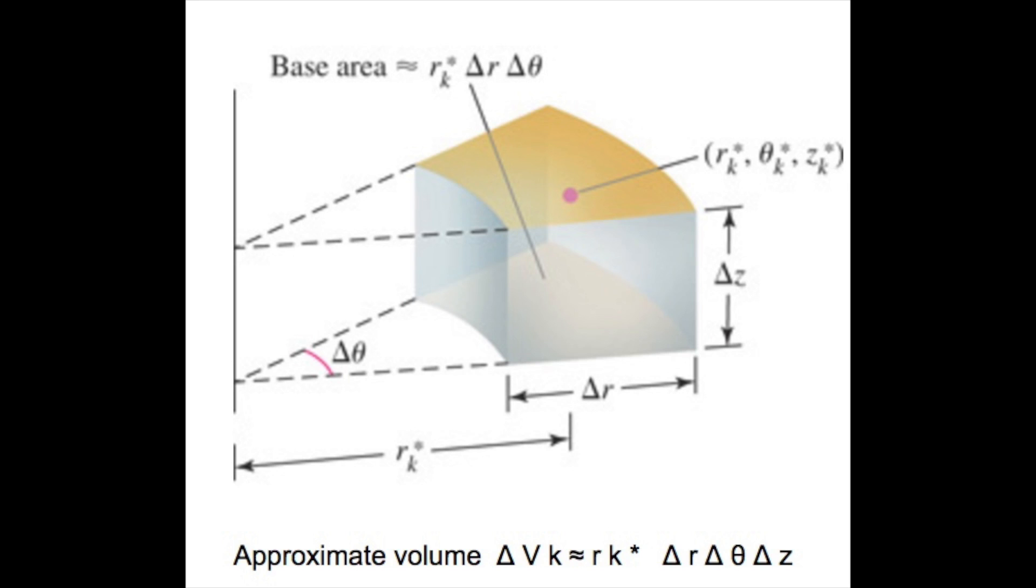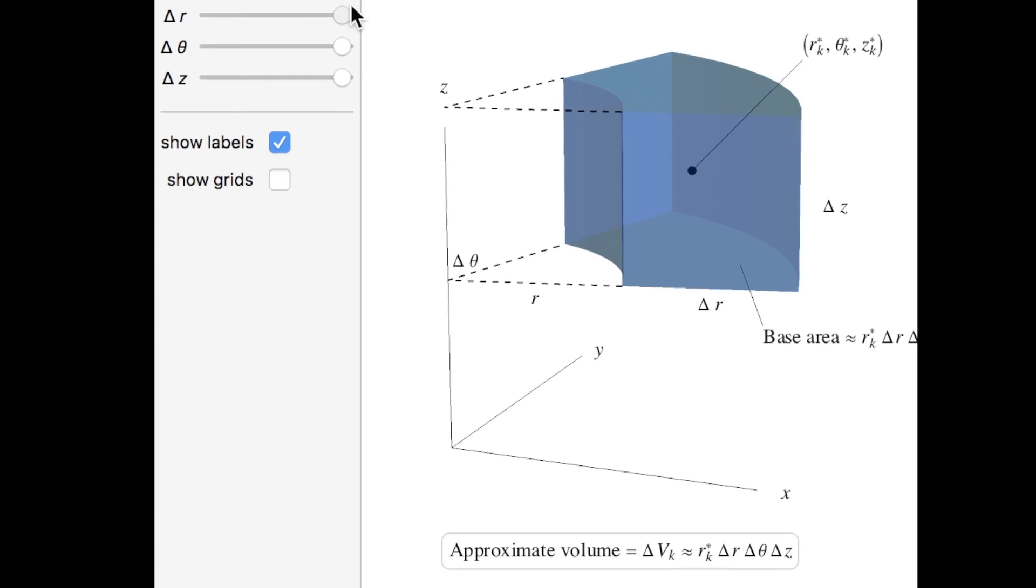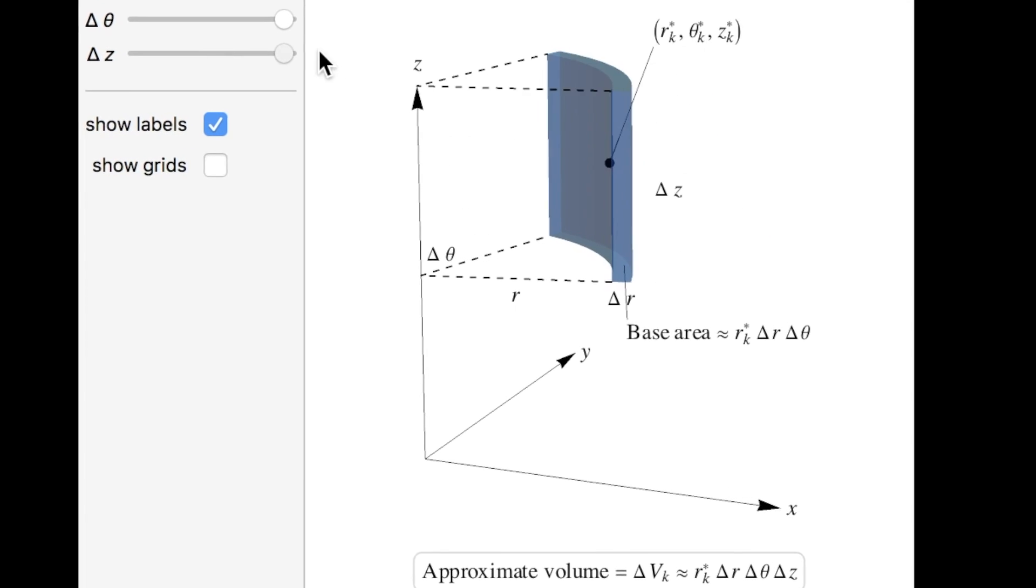Hence, we can conclude that the dV, or this infinitesimally small change in the volume, equals R dZ dr dθ.